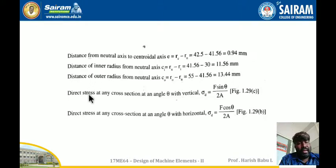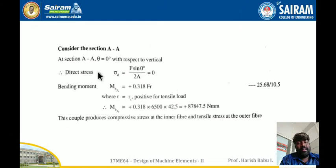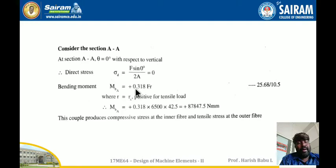The direct stress at any cross-section at angle theta — with respect to vertical — is Sigma_D equals F·sin(theta) divided by 2A; with respect to horizontal it is F·cos(theta) divided by 2A. For cross-section AA at theta equals 0, the direct stress is F·sin(0) divided by 2A, which gives 0. The bending moment formula is 0.318 × F × R, where R equals RC. Since it is a tensile load, the value is taken as positive.